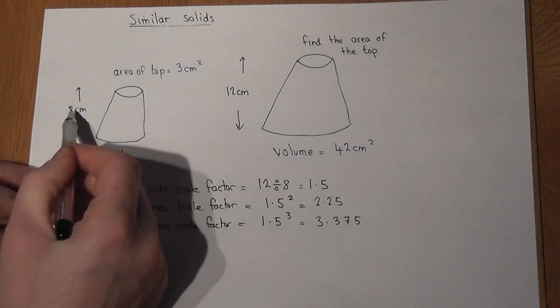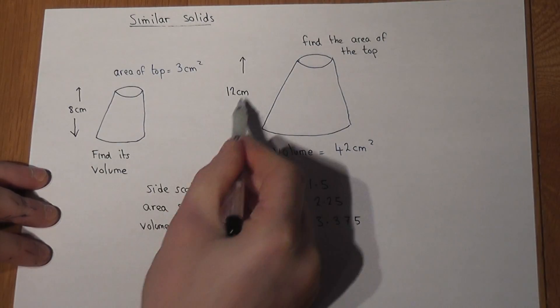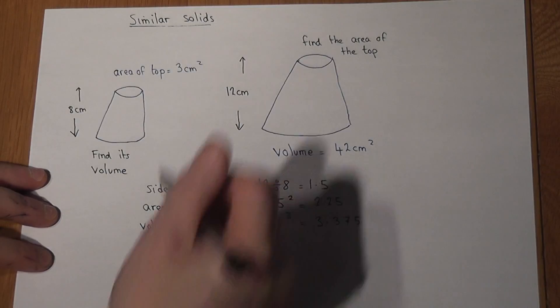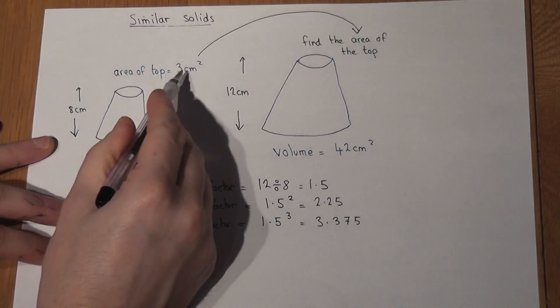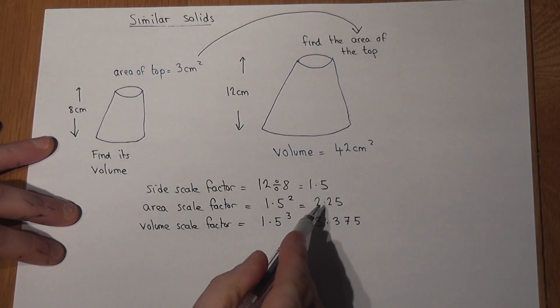From 8 to 12, I times by 1.5. So to find the new area, I multiply the area by the area scale factor.